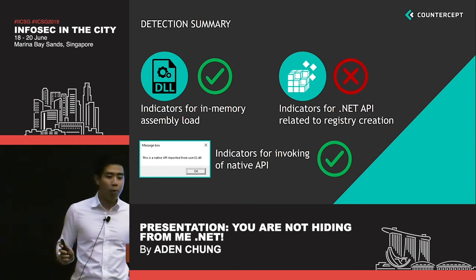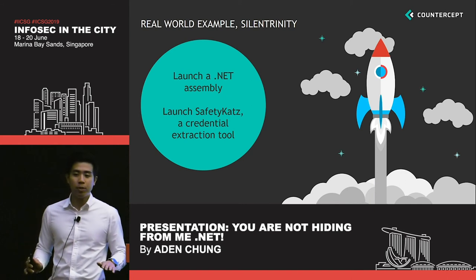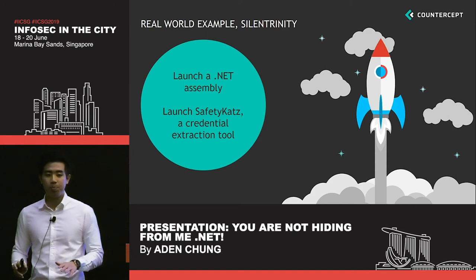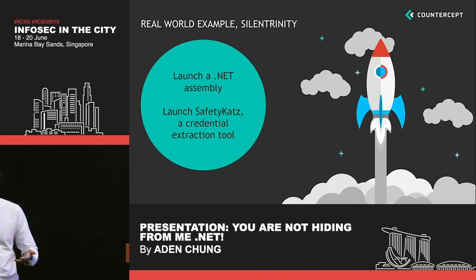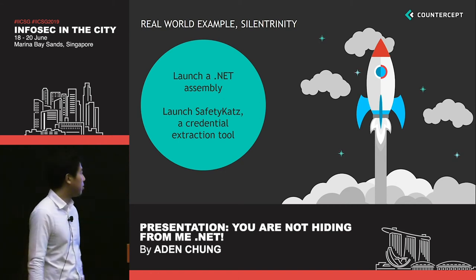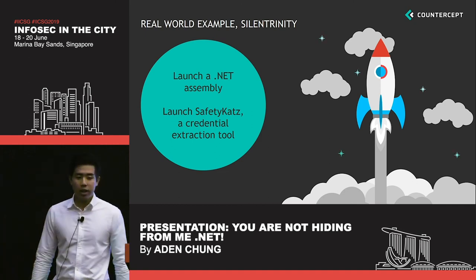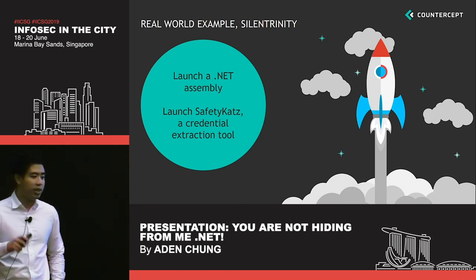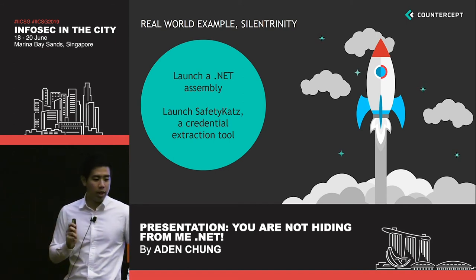We're going to use what we've learned on another demonstration — a real example: Silent Trinity. Silent Trinity is a post-exploitation agent built in IronPython. Essentially, IronPython is Python that has the ability to call upon the .NET assembly libraries. With it, we're going to see whether we can detect the launch of a .NET assembly. And with Silent Trinity, I'm going to do something more impactful than just popping a message box — I'm going to launch SafetyKatz, a credential extraction tool.